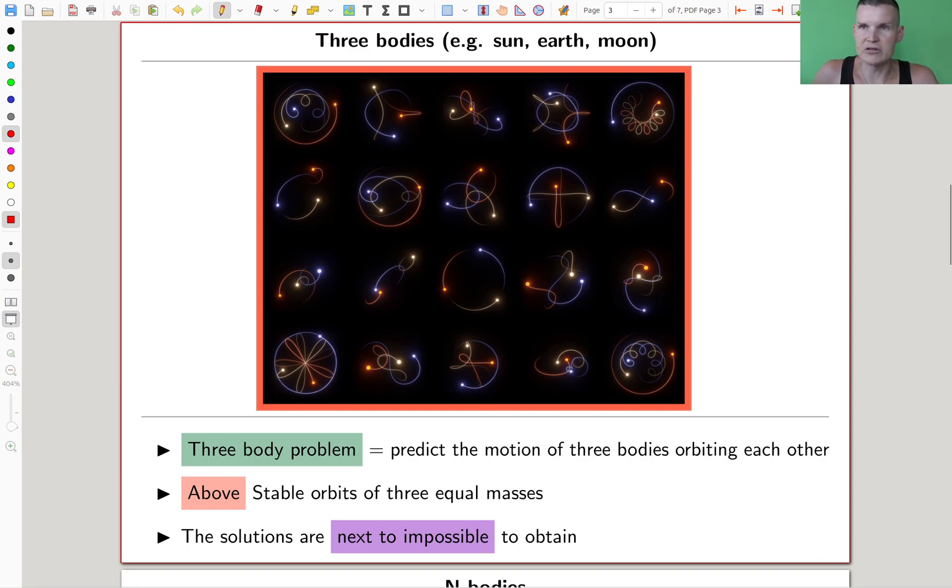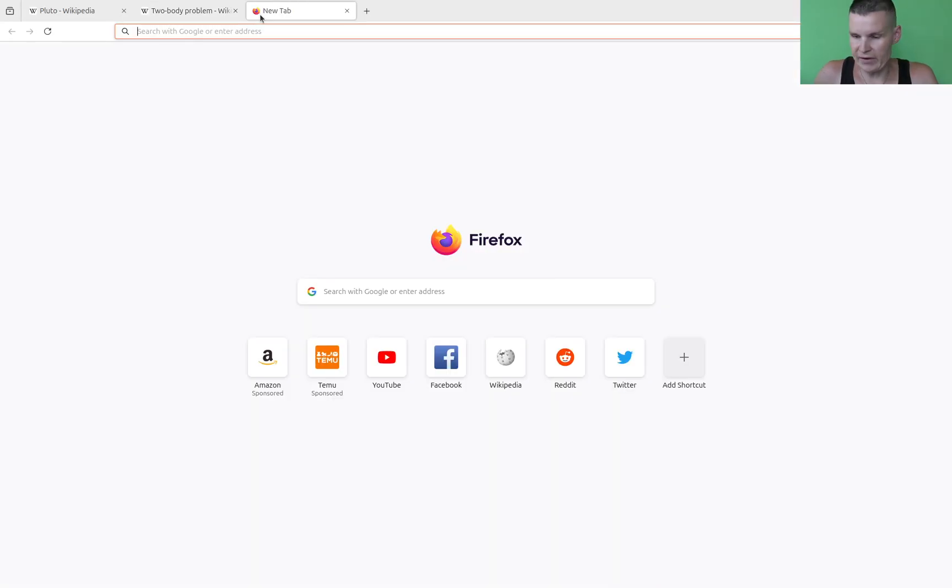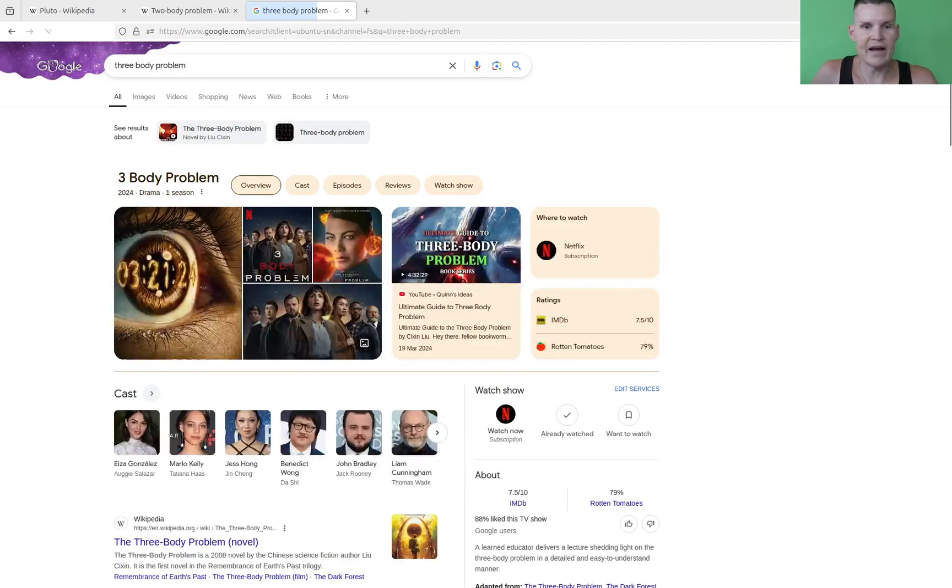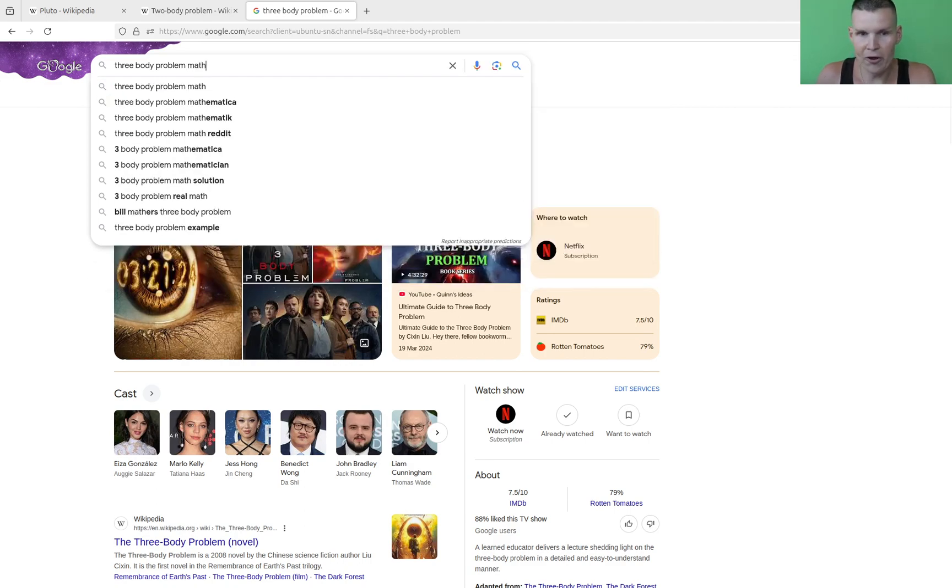We're talking about the general solution, and if the general solution is impossible, you usually go for specific solutions. Let's have a look at some of the specific solutions. We just Google three-body problem and hope for the best.